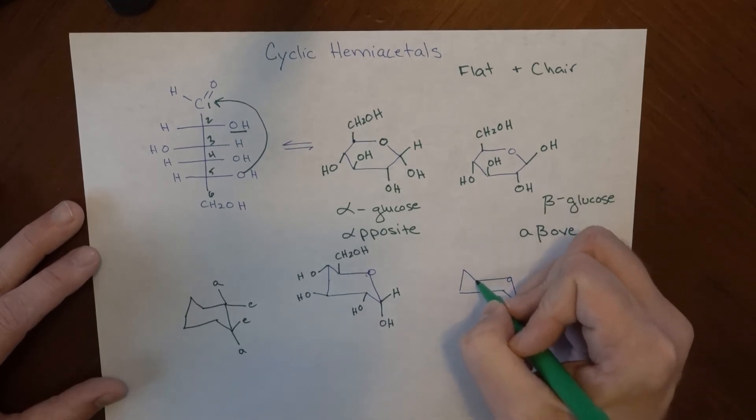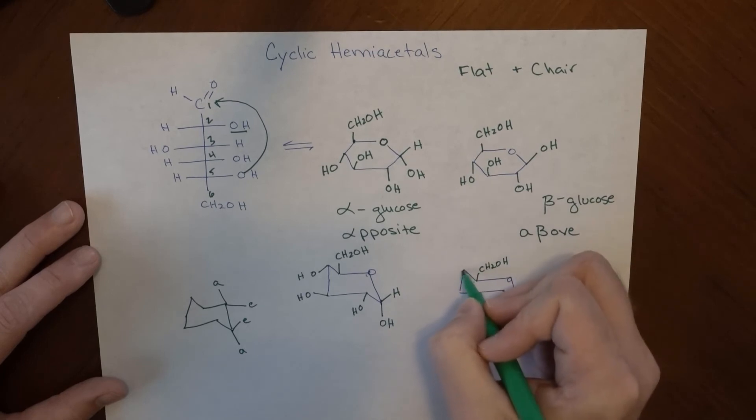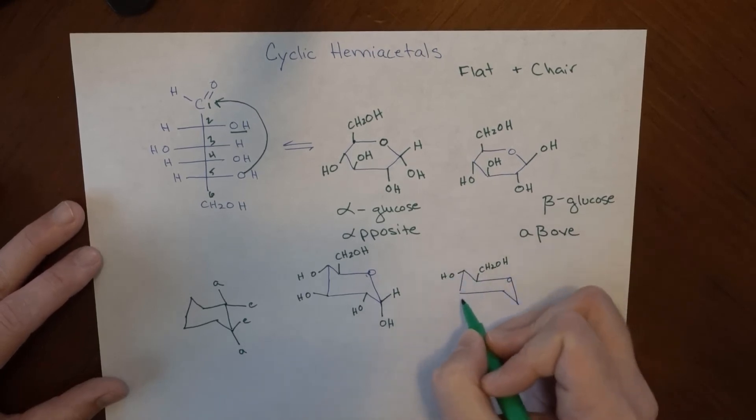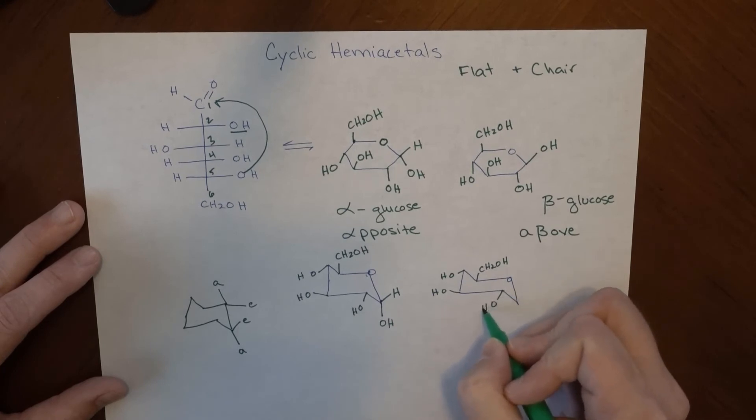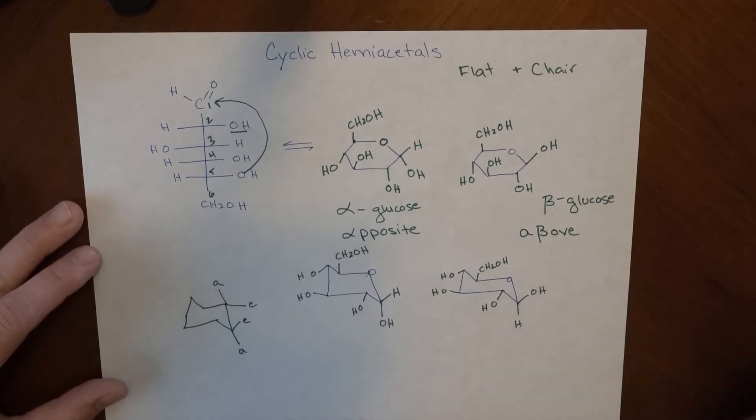Everything stays in the same place for this one, CH2OH. So OH here, OH equatorial here, OH equatorial here, and then here, because these things are on the same side of the ring, we have OH in the equatorial position and H in the axial.